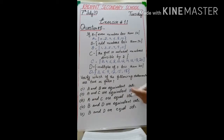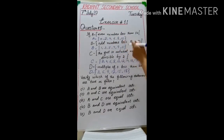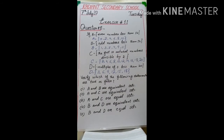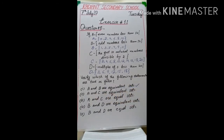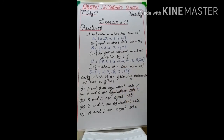Statement one: sets A and B are equivalent, meaning the number of elements in A and B are equal. Counting set A: 1, 2, 3, 4, 5, 6 elements. Counting set B: 1, 2, 3, 4, 5, 6 elements. The number of elements is the same, so set A and B are equivalent — this statement is true. Statement two: A and C are equivalent, meaning the number of elements in A and C are the same. Set A has 6 elements but set C has 10 elements, so set A and C are not equivalent — this statement is false.